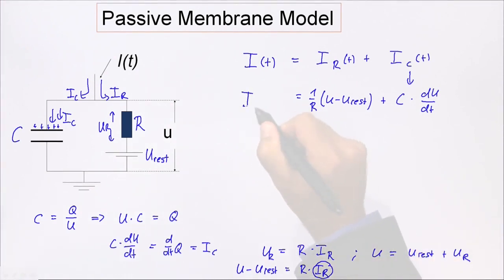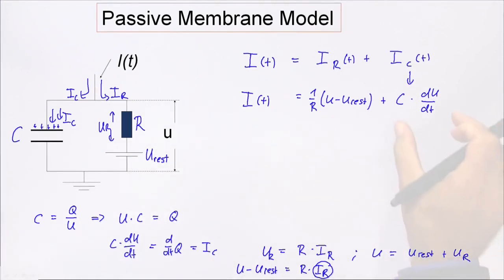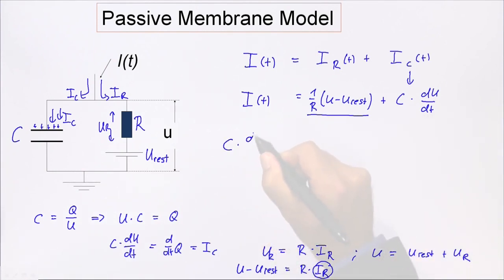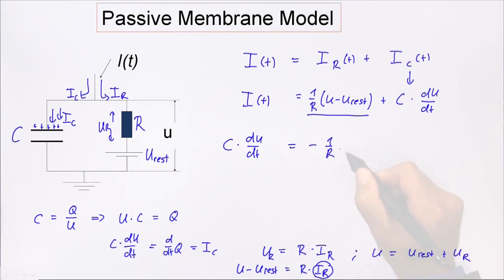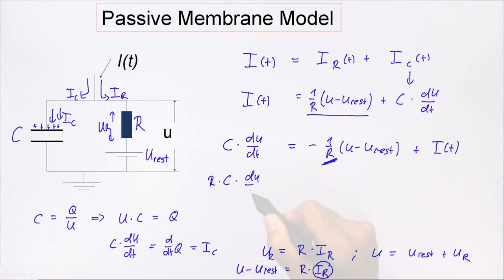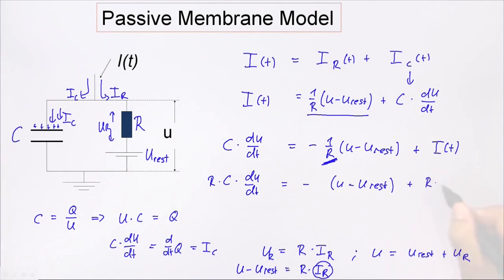So this is the total current. Moving the resistive current term to the left-hand side, we get: C times dU/dt equals minus (1/R)(U minus U-rest) plus I(t). Sometimes the equation is written in a slightly different form. If we multiply both sides by R, we get: RC times dU/dt equals minus (U minus U-rest) plus R times I(t). This is the final equation.